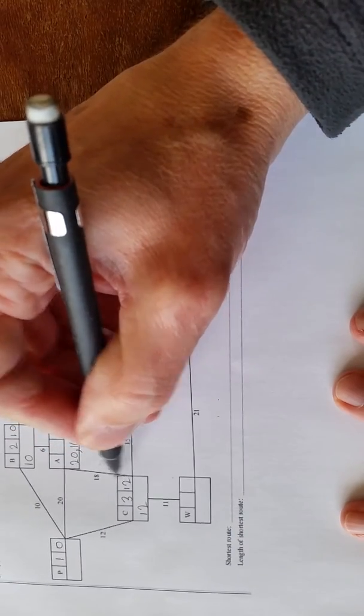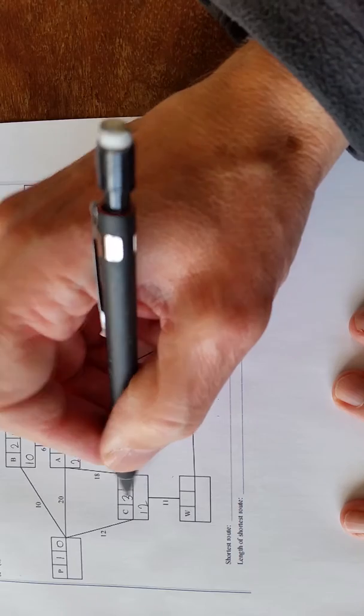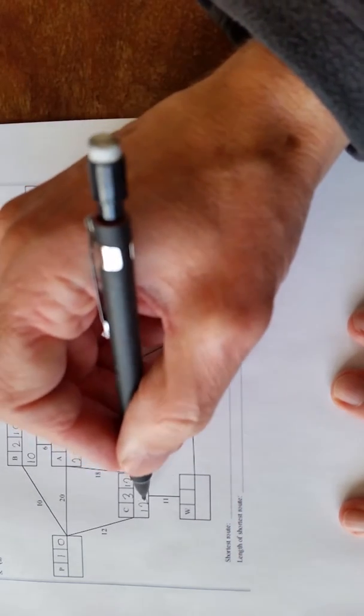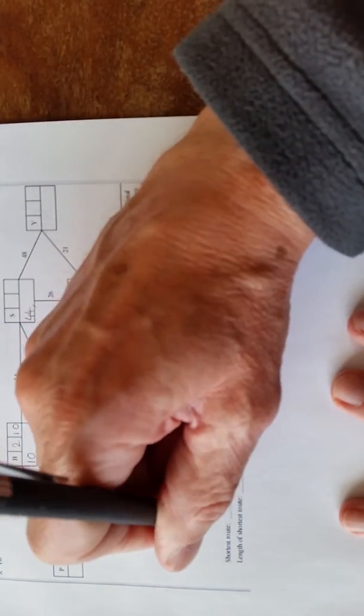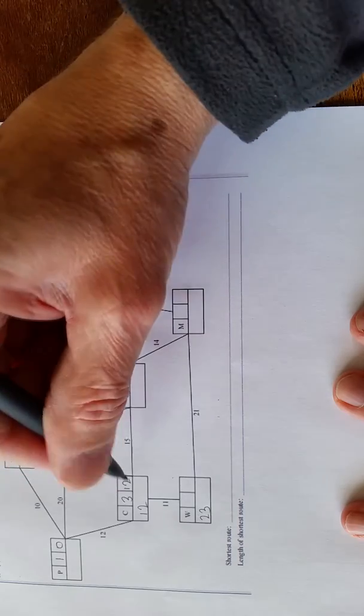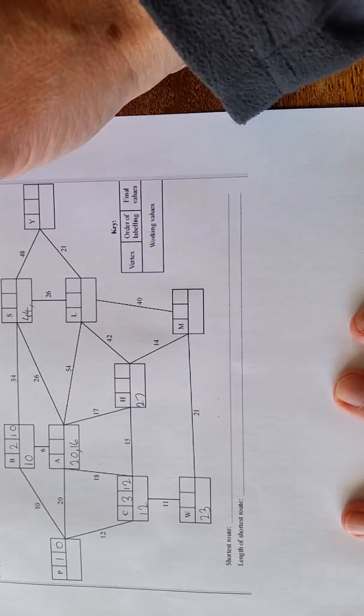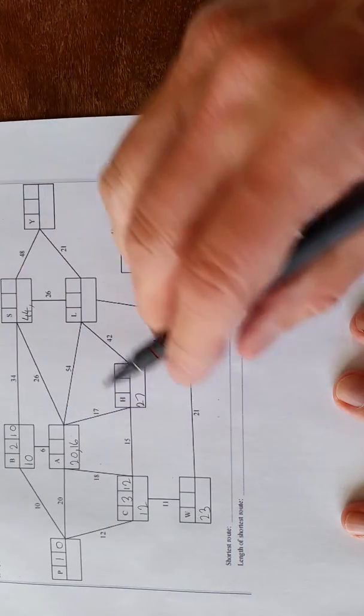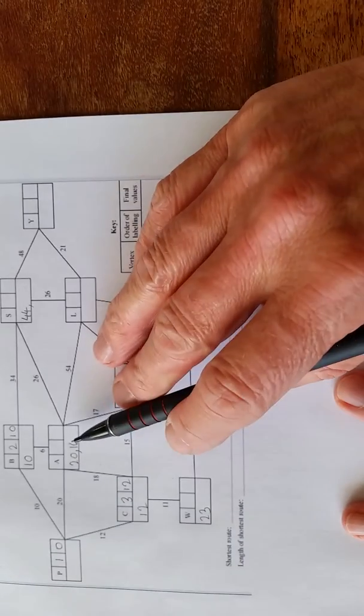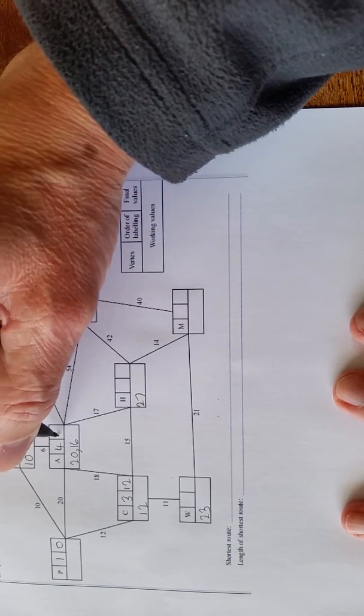Now let's check this. 12 add 18, too big, so we'll ignore that one because you only put the temporary values down if they're smaller. Then we've got 12 add 11 is 23, and 12 add 15 is 27. Let's see which is the shortest now. We've got 16, 27, 44. You can see 16 is the shortest. So that's 4, make this permanent, 16.